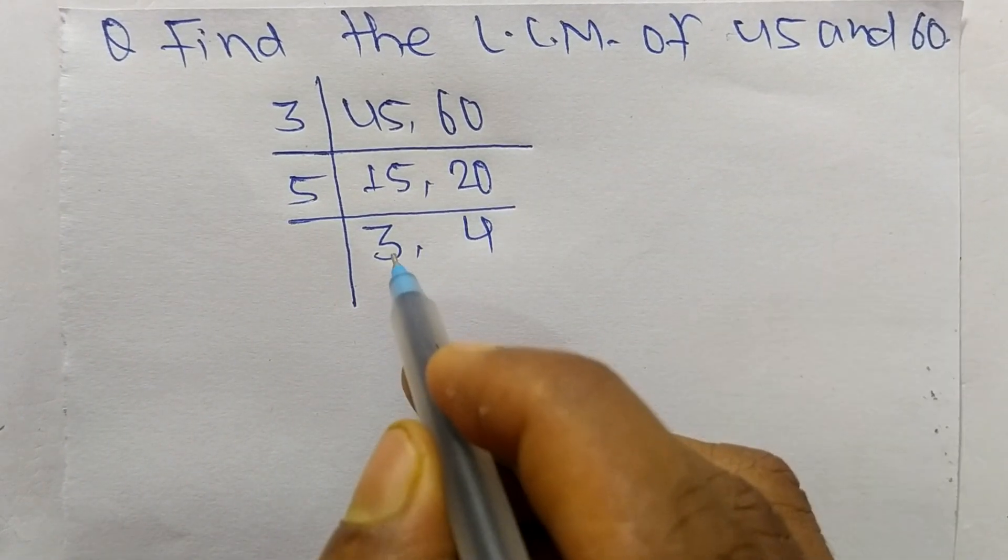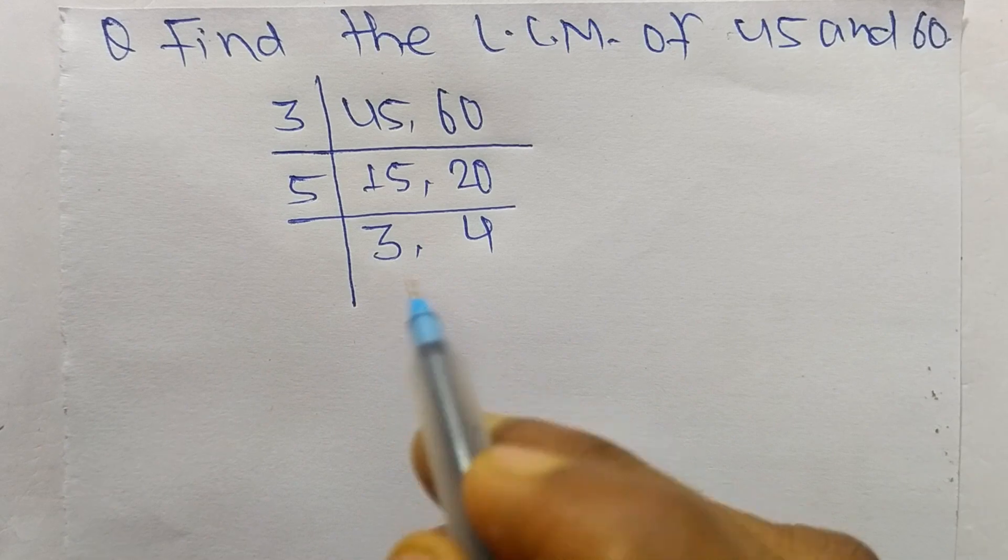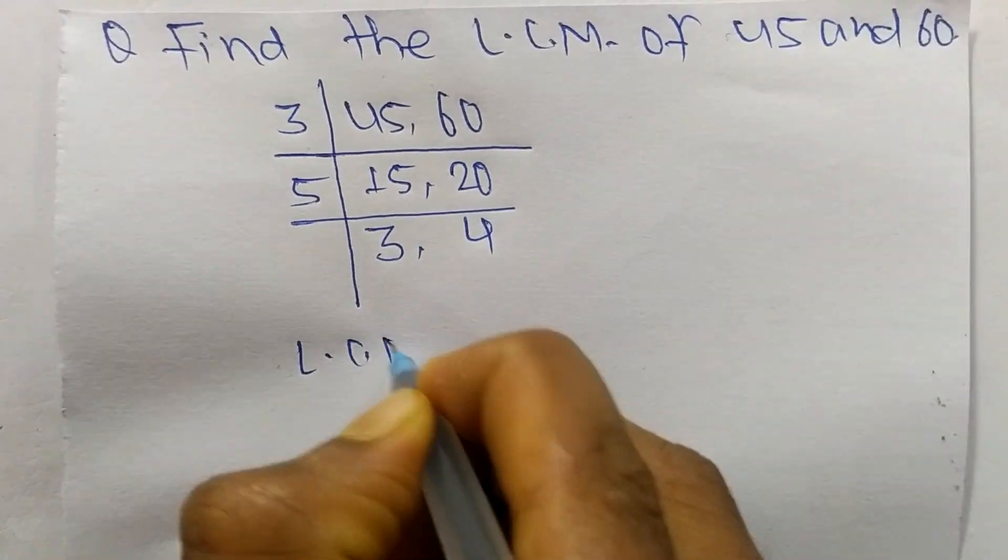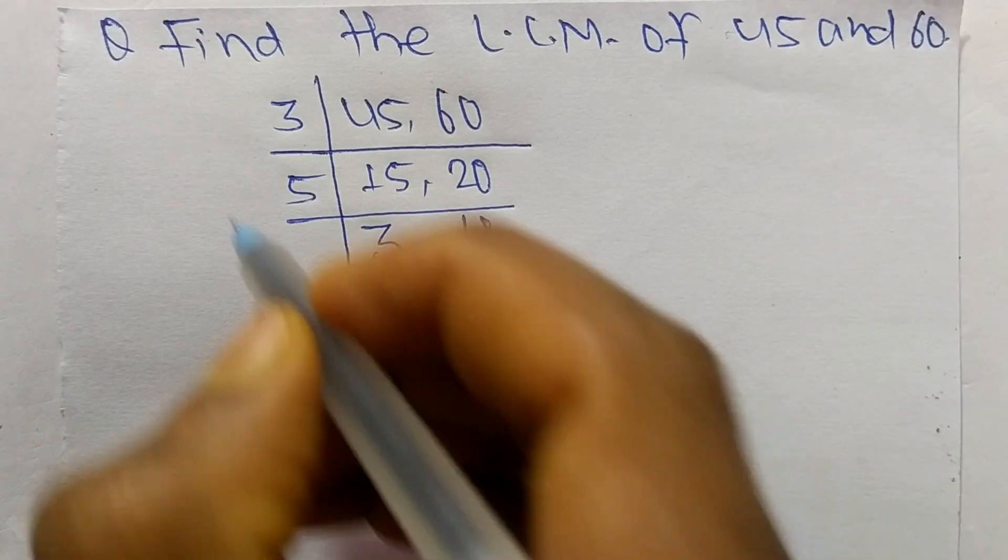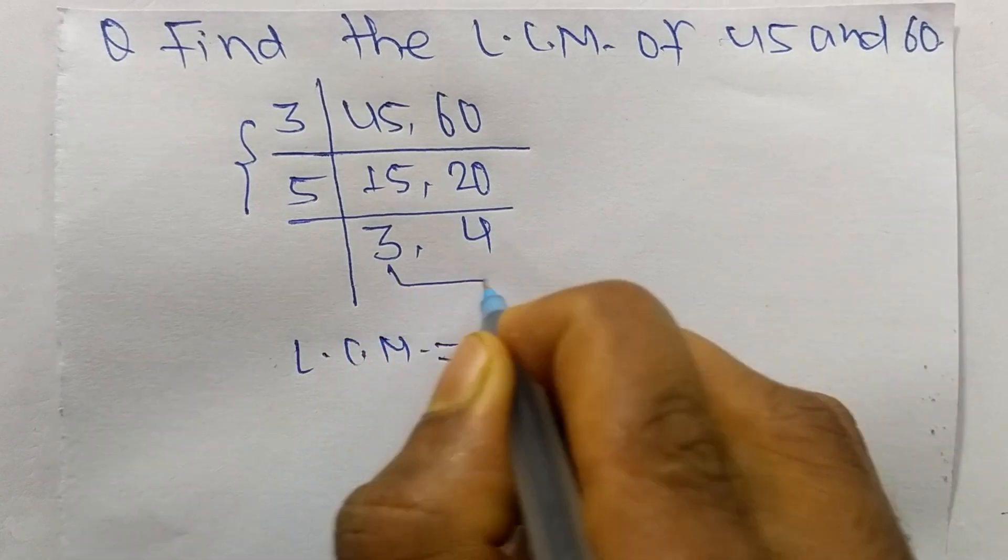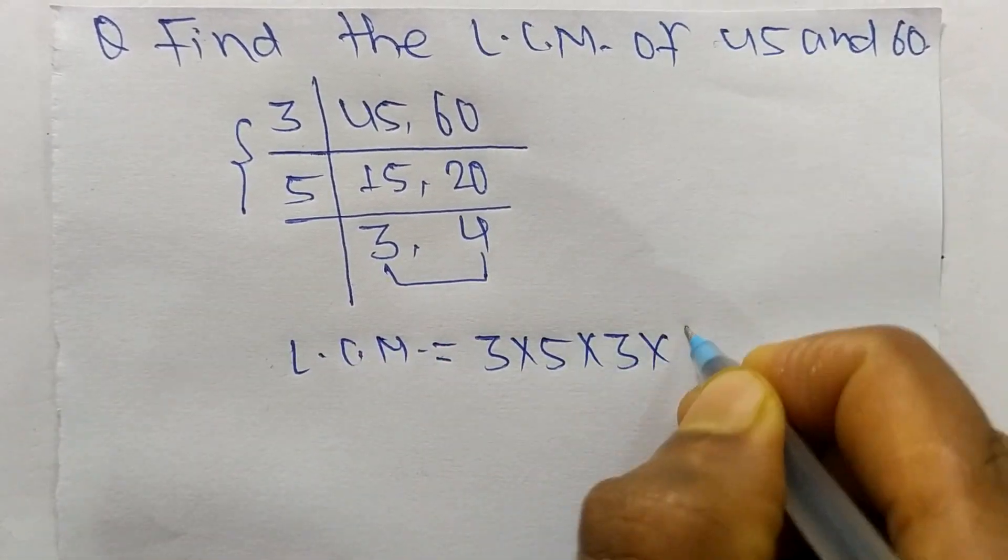Now we have 3 and 4 which is not exactly divisible by the same number. So the LCM is equal to, from this part it is 3 and 5. From this part it is 3 and 4.